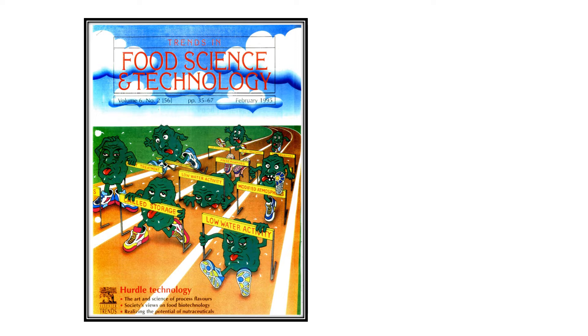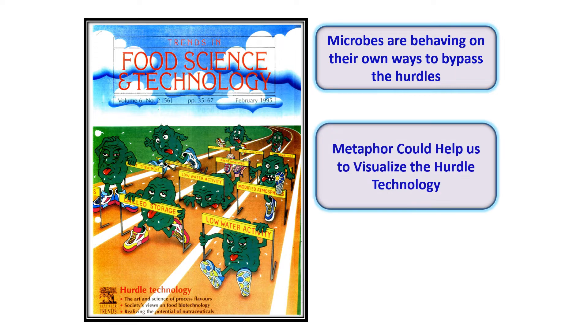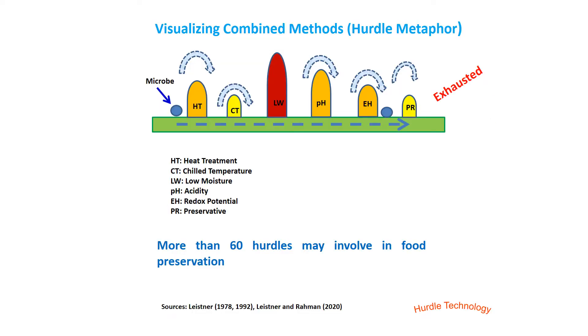We need to have a basic understanding of hurdle technology before its use. The word 'hurdle' in food originates from the hurdle jump in sports. In 1995, Trends in Food Science and Technology published the hurdles in relation to microorganisms. Hurdles are placed but microbes are not following the rules of hurdle jump. Microbes are behaving in their own way to bypass the hurdles.